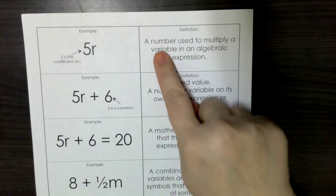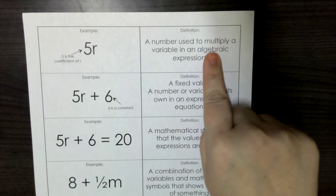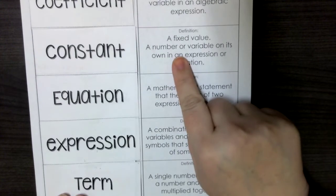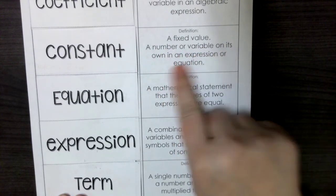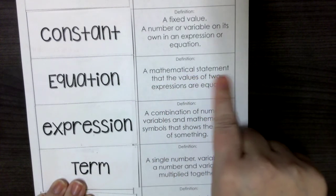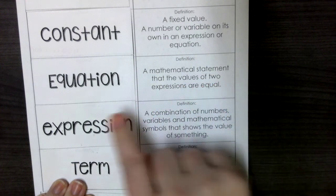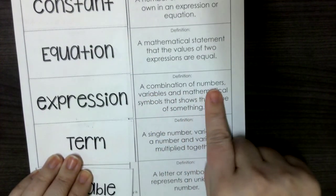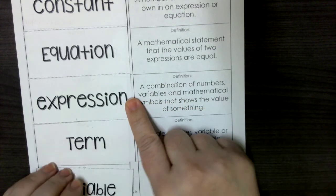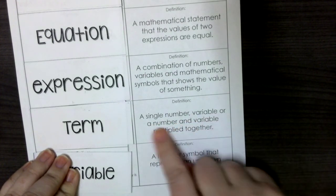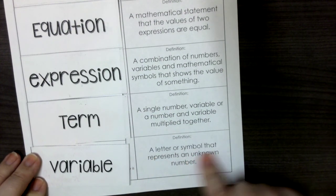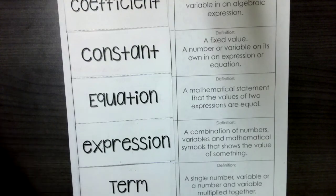I'm going to go over it again. A number used to multiply a variable in an algebraic expression is known as a coefficient. A fixed value, a number or variable on its own in an expression or equation — that would be a constant. A mathematical statement that has values of two expressions that are equal — equation. A combination of numbers, variables, and mathematical symbols that show the value of something — expression. A single number, variable, or a number and variable multiplied together — term. And a letter or symbol that represents an unknown number — variable.